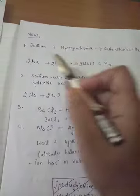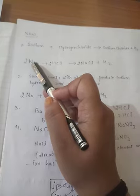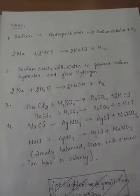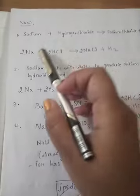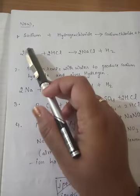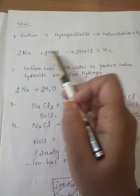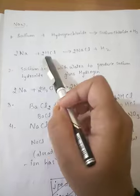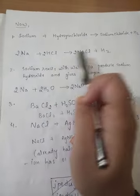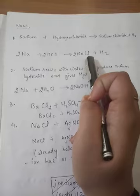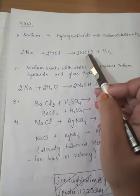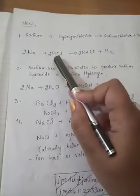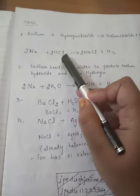You have to write all the symbols first: sodium is Na, hydrogen chloride is HCl, and sodium chloride is NaCl. After writing the symbols, you then balance the equation. Here, Na is already balanced. On the product side, Na2 is there, so 2 HCl is used — Cl is 2 on both sides. So this equation is balanced.